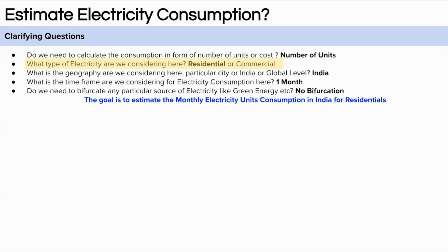The second question we can ask is about the consumption — are we considering units of electricity consumed by a commercial or residential entity? Let's assume we are thinking about residential entities. The third question is about geography — like a city, entire India, or at a global level? Let's assume we are thinking about electricity consumption in India.